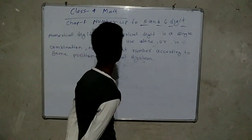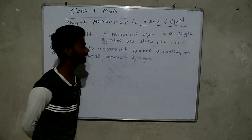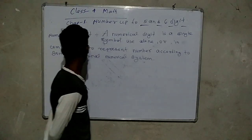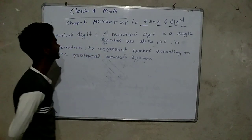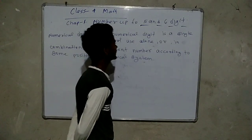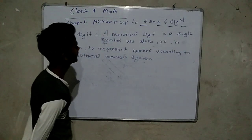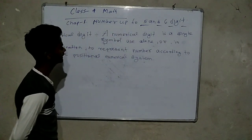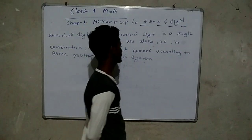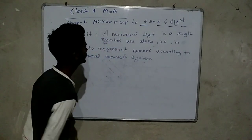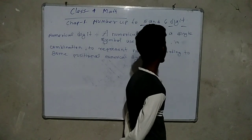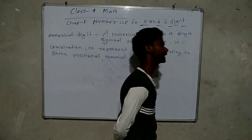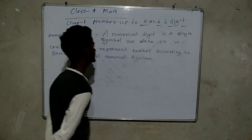A numerical digit is a single symbol used alone or in combination to represent a number according to some position number system.